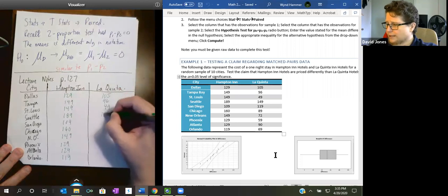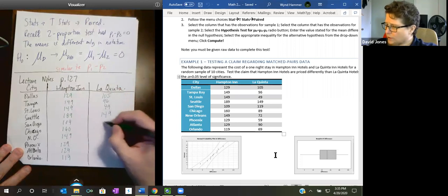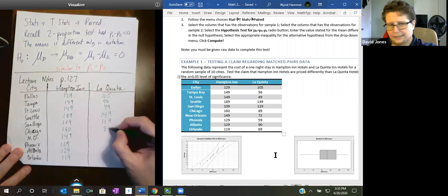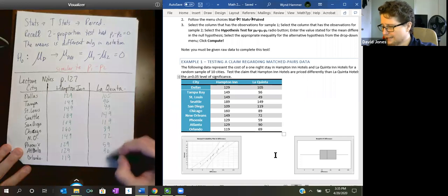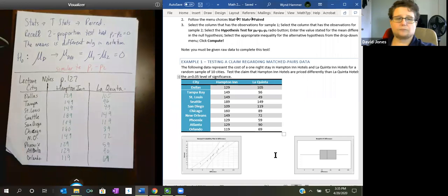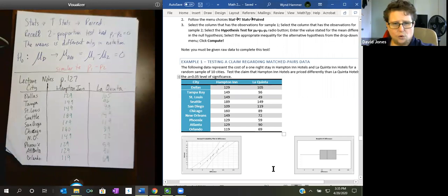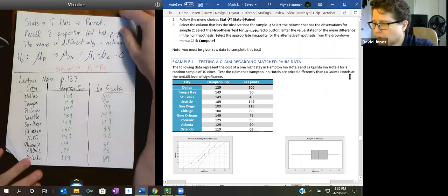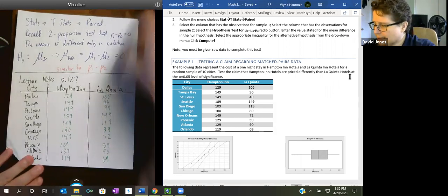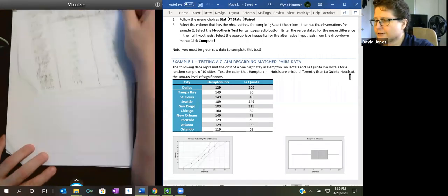Notice they're selected throughout the country. Don't have a lot in the Northeast, but a lot of places. And the prices we have are $129, $149, $149. I'm literally just copying this table down so you can copy it too or reference it from the lecture notes. And the question is, at alpha equals 0.05 level of significance, Hampton Inn hotels are priced differently than La Quinta hotels.